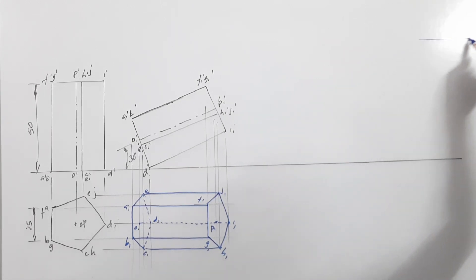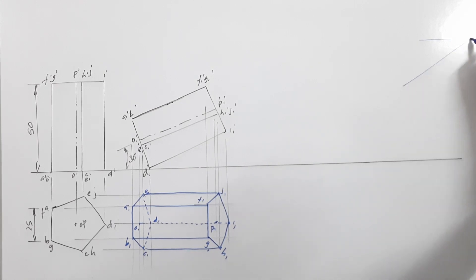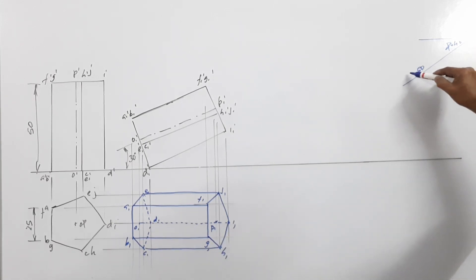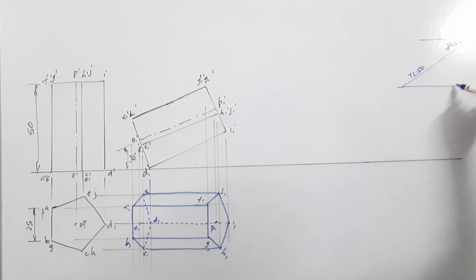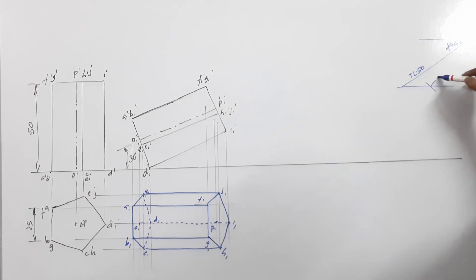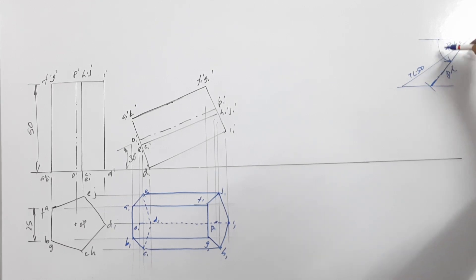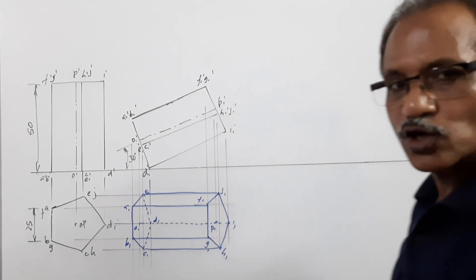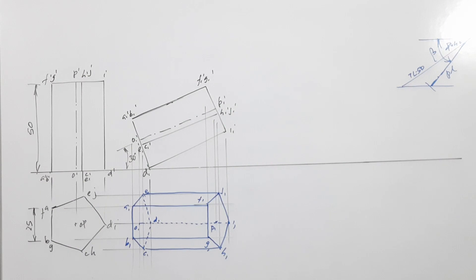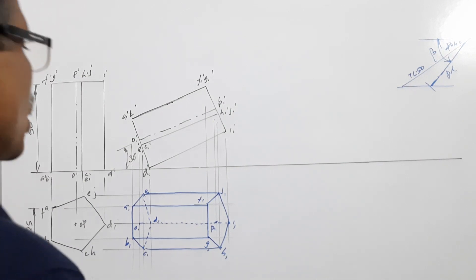To find beta, draw a line at phi equals 40 degrees. Draw a line of true length of axis. Get the locus. Take the plan length of the axis from here and cut an arc. This angle is beta. I do not know what beta is; I have not drawn this to dimension, so I do not know how much beta is — you have to find it out.